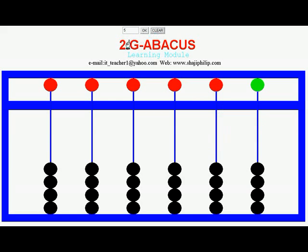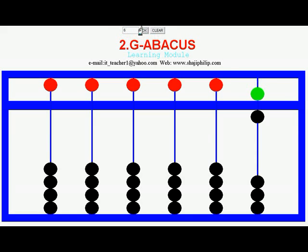In this case, if you want to represent 5, the Heaven bead is set — when it moves down it is in the set position. Now the value in the Abacus is 5. Now suppose if you want to represent 6: that is 5 plus 1, equals 6.